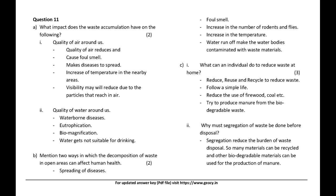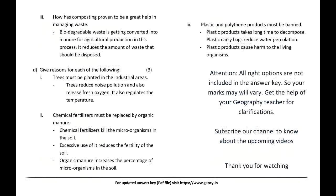What can an individual do to reduce waste at home? Answer: Reduce, reuse, and recycle to reduce waste; follow a simple life; reduce the use of firewood and coal; produce manure from biodegradable waste. Why must segregation of waste be done before disposal? Segregation reduces the burden of waste disposal so many materials can be recycled and biodegradable materials used for manure production. How has composting proven to be a great help in managing waste? Biodegradable waste is converted into manure for agricultural production, reducing the amount of waste that needs disposal.